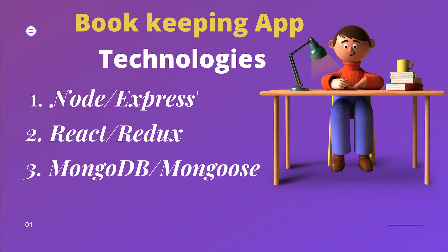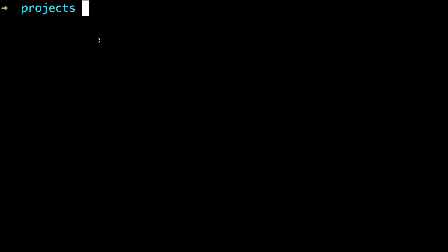Hello guys, welcome to the first part of this project. In this lesson we will set up our environment. What you need to get started is Node and a text editor. I'm going to use VS Code and Postman. For the sake of people not familiar with the MEAN stack project, I'll explain every bit of code I write. If you think I'm going slow, you can speed up, but I'd advise you to stick around.